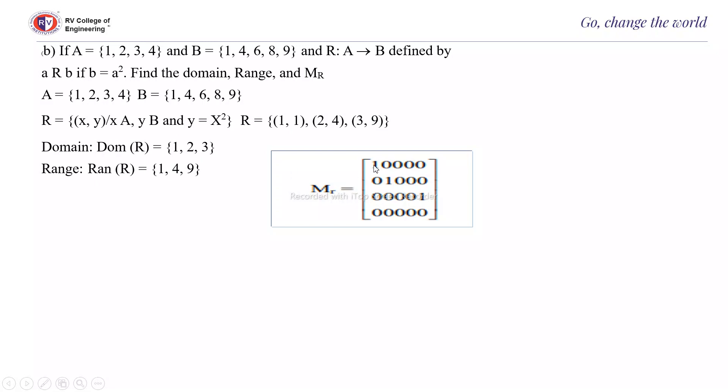The matrix representation has (1,1), (2,4), and (3,9) as the non-zero entries, and all the remaining elements are 0.